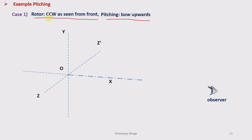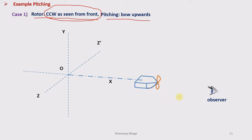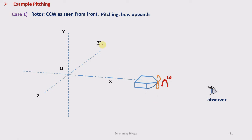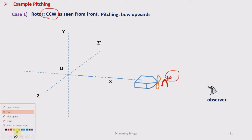As seen by the observer from the front side, the rotor of the ship is rotating in the counterclockwise sense. So I have drawn the ship along the x-axis such that its front side is towards the observer. This is the first thing you have to do: draw the ship in the correct position. As seen from the front side the rotor is rotating counterclockwise, so I have marked the direction of the rotor using a circular arrow. The speed with which the rotor rotates about its own axis is called spin velocity, represented by Omega.